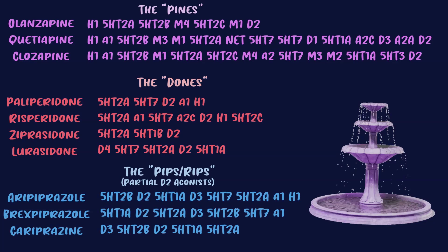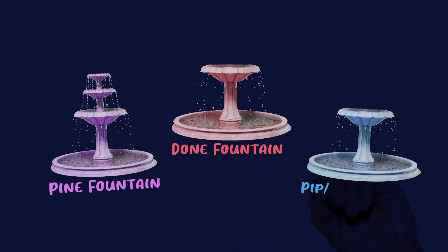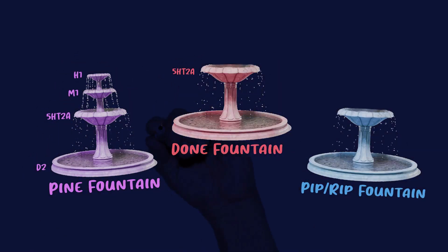I personally have an awful memory for random facts, so looking at receptors listed out would be massively overwhelming. But now that you know these drugs exist as subclasses — the pines, the dones, the pips and a rip — I think you'll be able to do it really easily. I want to introduce the pine fountain, the done fountain, and the pip-rip fountain. These fountains recognize that there's a receptor profile backbone for each subclass, making it easy to memorize and understand both the properties and the side effect profiles of the drug classes.